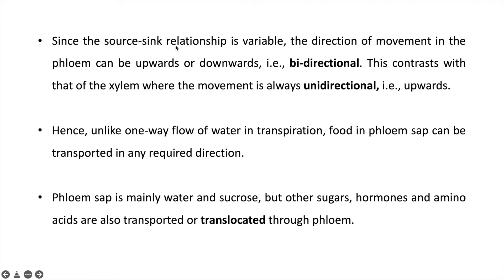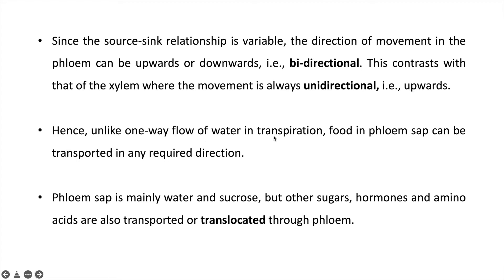Now we will study source-sink relationship. Source is the part of the plant where the plant loads food and minerals, and sink is the part where the plant deposits its food and minerals. Movement of food and minerals happens through phloem, and this movement is both upward and downward depending on the requirement — this is called bidirectional movement. In contrast, movement in xylem is always unidirectional, in the upward direction, like the flow of water in transpiration.